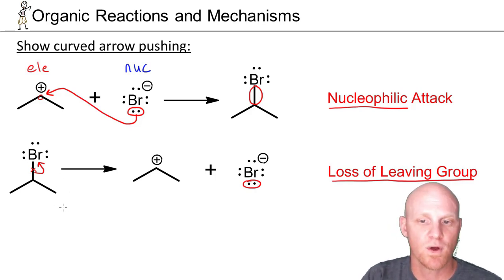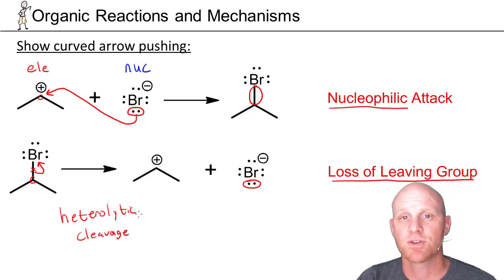When a bond breaks this way, where one side, in this case bromine, gets both electrons, and the other side, carbon, gets nothing, we call this heterolytic cleavage. We'll contrast that with the homolytic cleavage we saw at the beginning of this chapter. In homolytic cleavage, both sides would get one electron and both would be radicals. This is heterolytic cleavage, which is much, much, much more common.